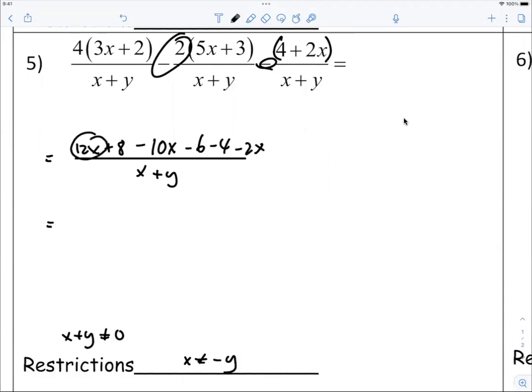All right, so 12x minus 10x minus 2x, that x term would be gone. And 8 minus 10 would be negative 2. So after everything is canceled, you simply have negative 2 over x plus y, or you can also write it this way.